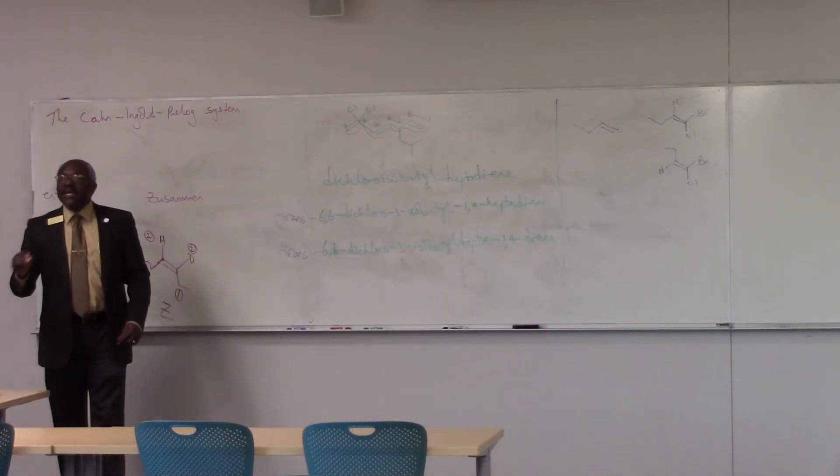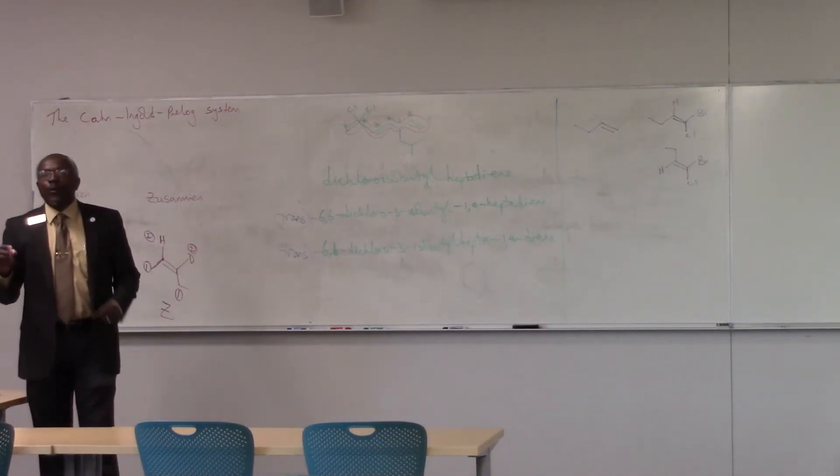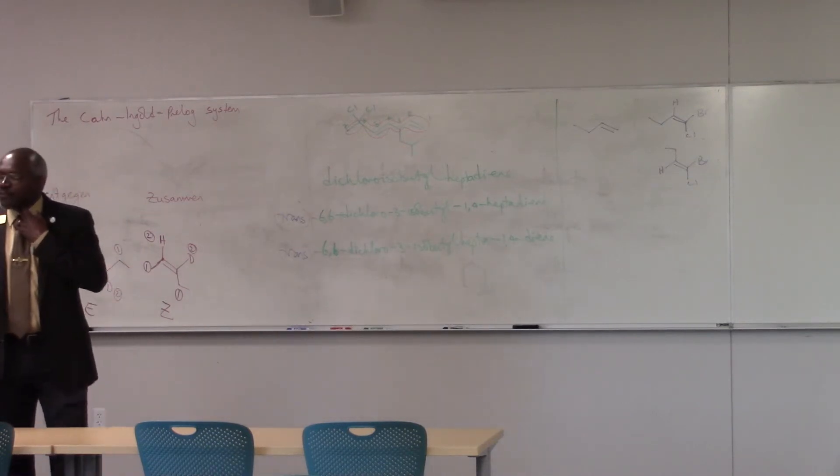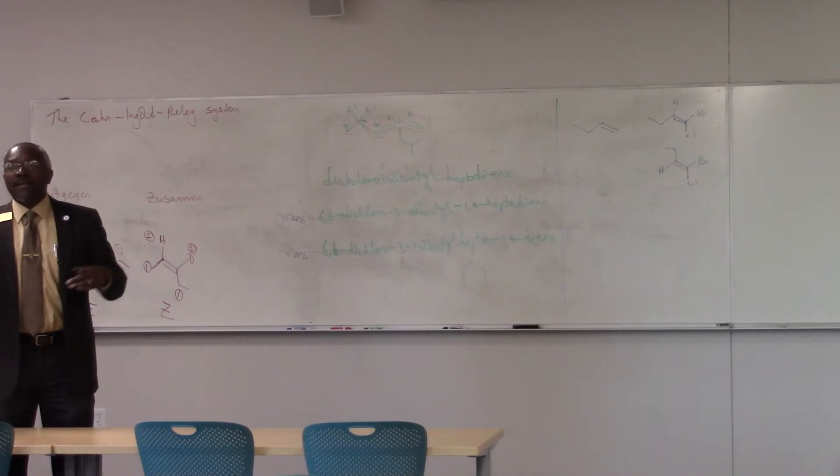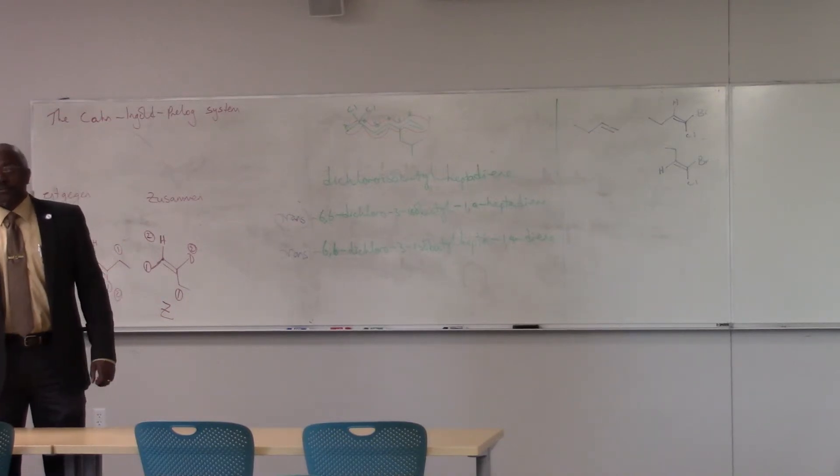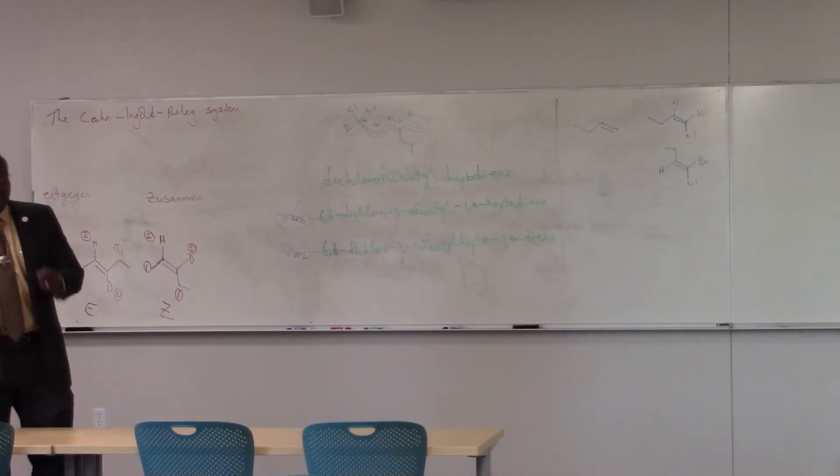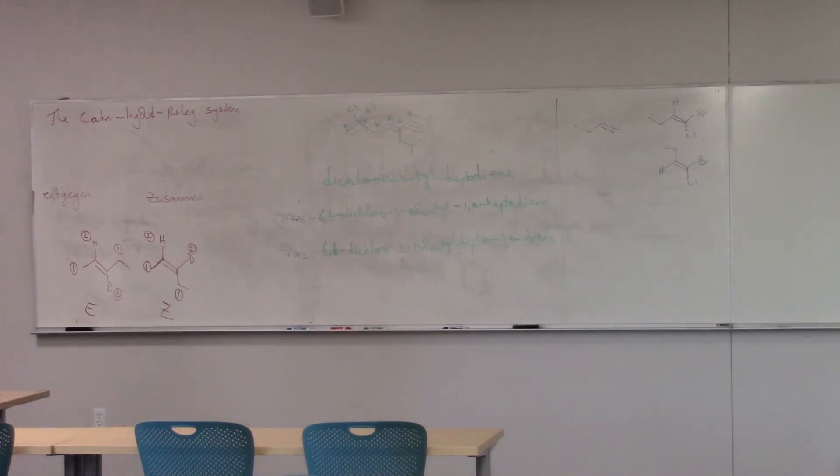Now, E and Z will work anytime there is geometric isomerism. Cis and trans will not. So there are cases where cis and trans will not apply when you don't have the same groups. On carbon 1 and 2, on the double bond. But E and Z will always apply if there is geometric isomerism.